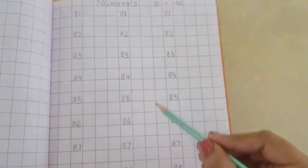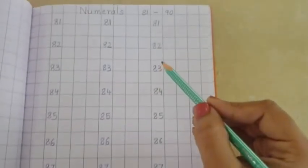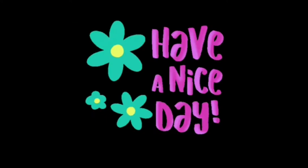So children, in your square line book you have to write numerals from 81 to 90 three times. Okay children. Bye bye. Have a nice day.